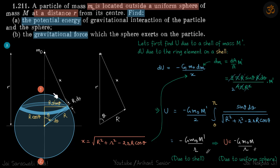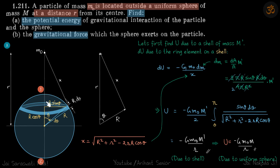We need to find the potential energy between a mass M0 and a uniform sphere which is at a distance R from this mass M0, and then we also need to find the force between the mass and the sphere.